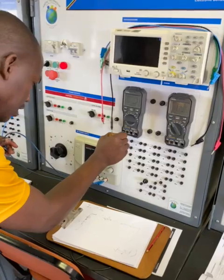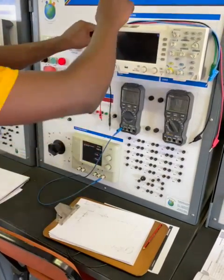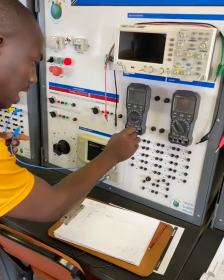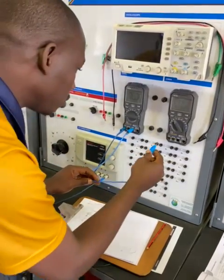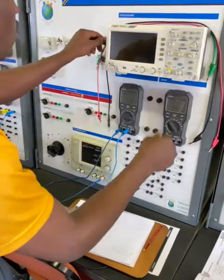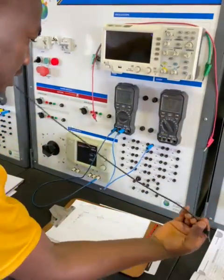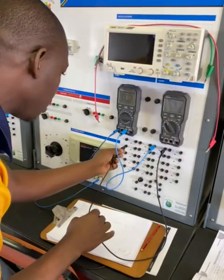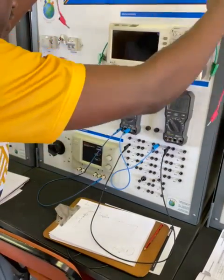Then from the negative of the ammeter it goes to the positive of R1. From the negative of R1 it goes to the positive of R2, and from the negative of R2 goes to the positive of R3.